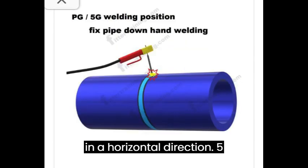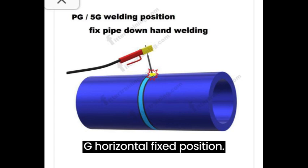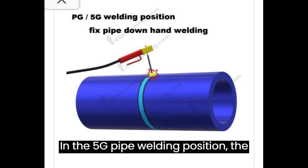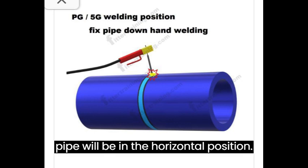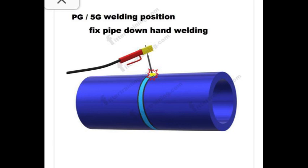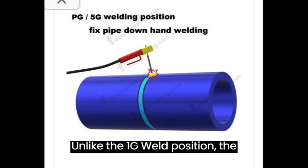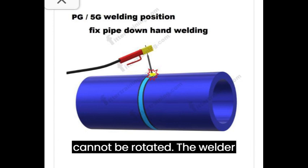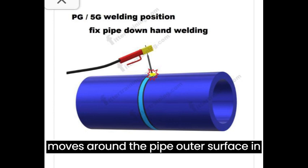In the 5G pipe welding position, the pipe will be in the horizontal position. Unlike the 1G weld position, the pipe will always remain fixed and it cannot be rotated. The welder moves around the pipe's outer surface in the vertical direction to perform the welding.